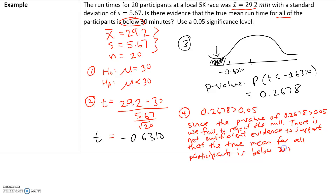This is saying that the sample mean of 29.2 could have occurred by chance — there's a high probability that this could have occurred just by chance. So we don't have enough evidence to support that the mean run time for all participants is below 30 minutes.